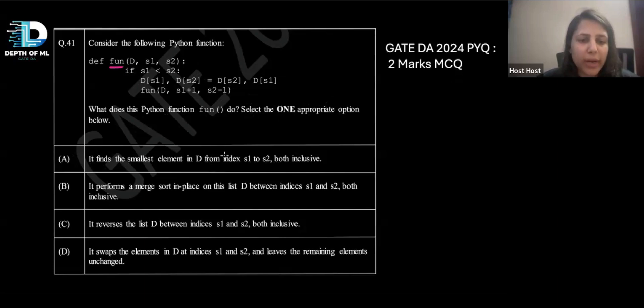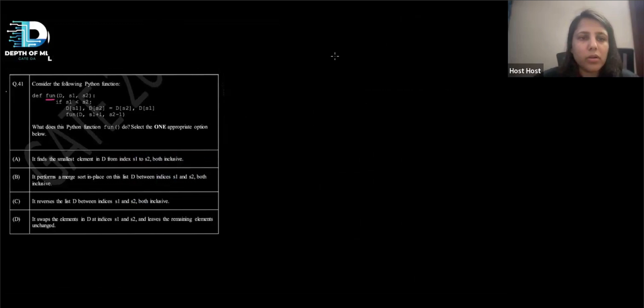It's saying it finds the smallest element in D from index S1 to S2, both inclusive. It performs a merge sort in place on the list D between indices S1 and S2, both inclusive. It reverses the list D between indices S1 and S2, both inclusive. And it swaps the elements in D at indices S1 and S2, leaving the remaining elements unchanged. So there are four options. Let's see how to go about them.